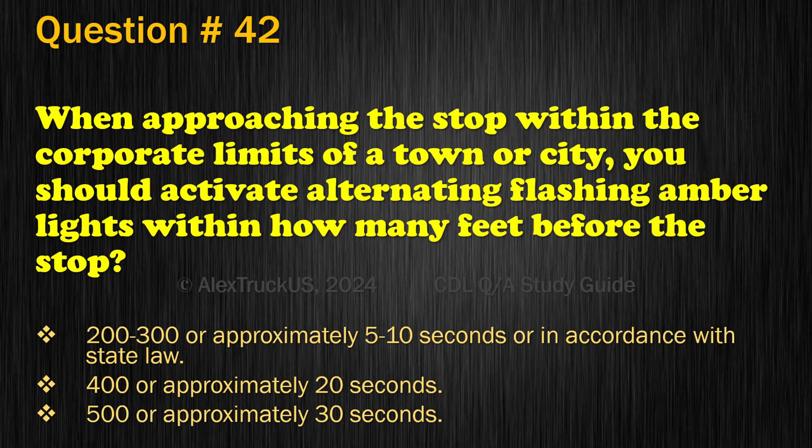Question 70. The golden rule for school buses when approaching and crossing railroad tracks is: Stop, look, and listen; Stop, look, and turn on the radio lights overhead; or Stop, go, and stop. The correct answer is: Stop, look, and listen.